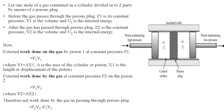One mole of gas contained in a cylinder is divided into two parts by means of a porous plug. Before the gas passes through the porous plug, p1 is the constant pressure, v1 is the volume, u1 is the internal energy, and t1 is the initial temperature. Once it passes through the porous plug into the region of low pressure, its pressure is p2, temperature is t2, volume is v2, and internal energy is u2. Since the gas moves from higher to lower pressure, p1 is greater than p2.